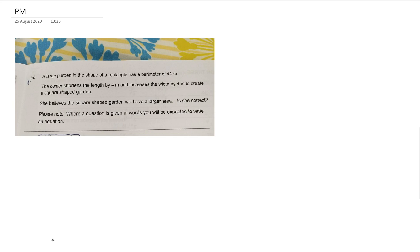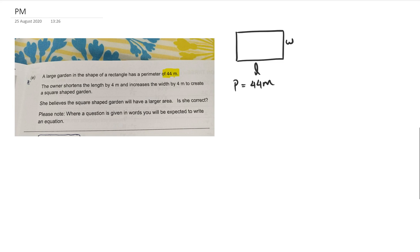So let's get started. We've got a large garden in the shape of a rectangle with a perimeter of 44. We have the length at the bottom and the width on the side. A perimeter of 44 meters means the border equals 44 meters, and because there's another L on the opposite side and a width on the left, we can say 2L plus 2W equals 44.